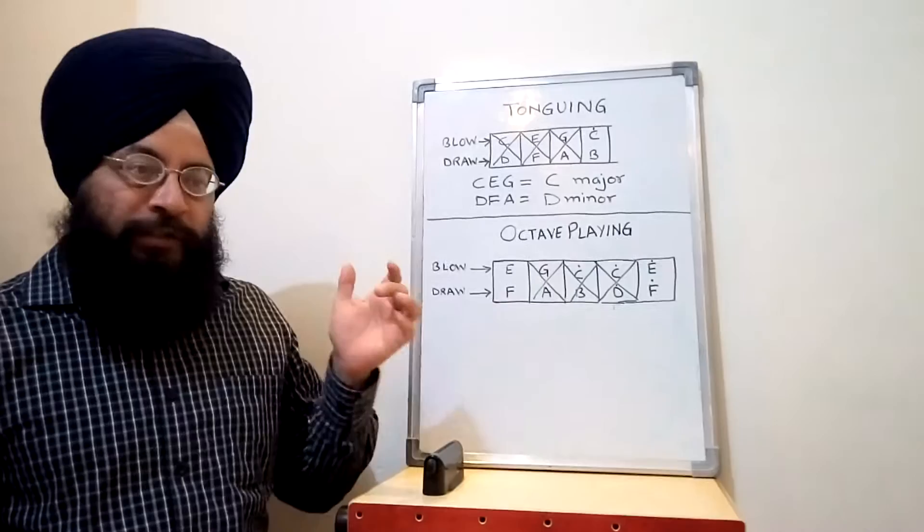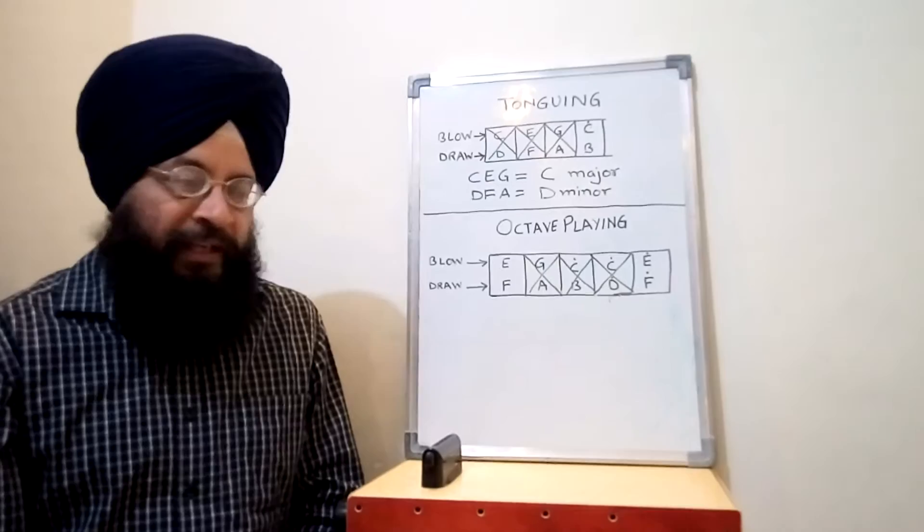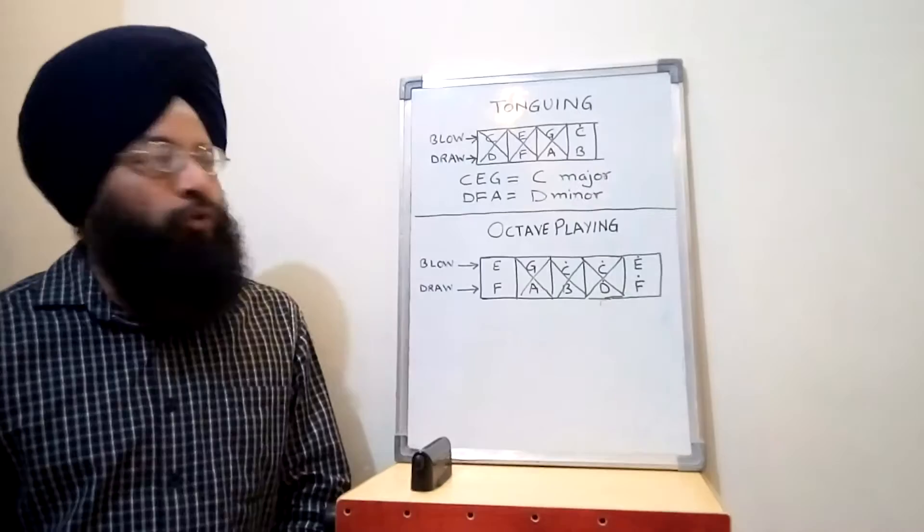So that particular phenomenon is called tonguing. Tonguing sounds very good in many songs, but there is a very famous saying about music: a good musician knows when to play, but a great musician knows when not to play. Same is the case with tonguing - you must be very particular about playing tonguing in a song specifically.